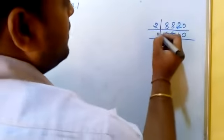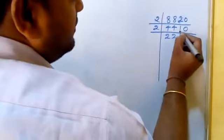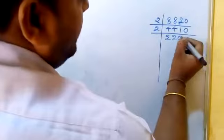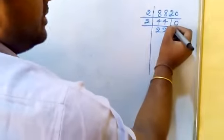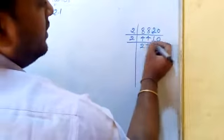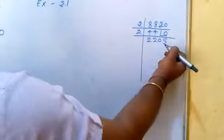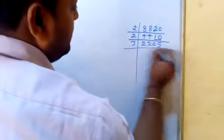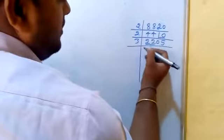Phir se 2 se kar sakte hain. One mein nahi chal paayega, toh yahan par hum karenge zero lagakar — kyunki jo single number mein nahi chal pa raha, haan par 2 toh hume 10 mein chalana hai, toh uske pehle ek zero lagaayenge. Phir 2 se nahi ho paayega isko, toh 3 agar hum karein — 3 se hum kar sakte hain. Isko hum divide karenge 3 se.